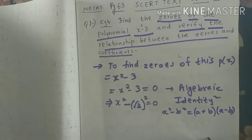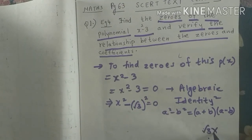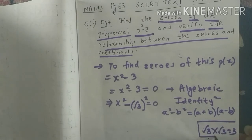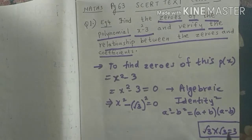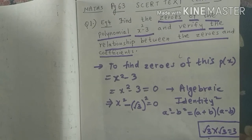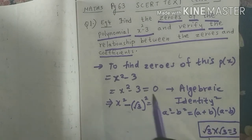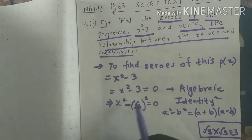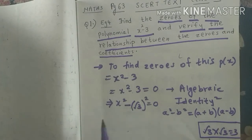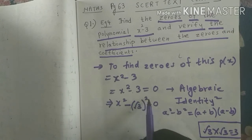Why am I writing this as x squared minus root 3 whole square? Because we know that root 3 into root 3 is 3. Similarly, root 2 into root 2 is 2, root 1 into root 1 is 1, root 5 into root 5 is 5. So root 3 into root 3 can be written as root 3 whole square. Therefore I am writing x squared minus 3 as x squared minus root 3 whole square, because I want to make this the form a squared minus b squared.